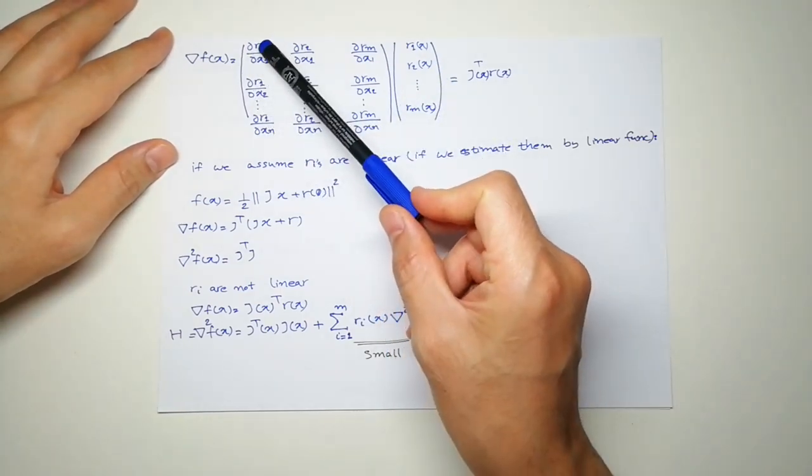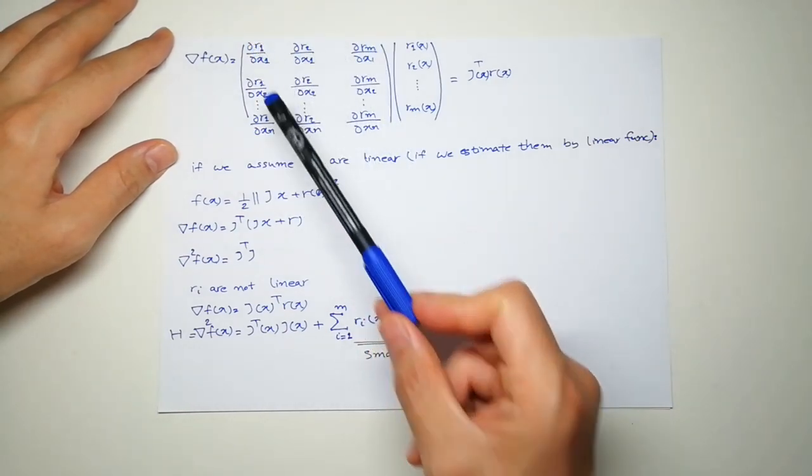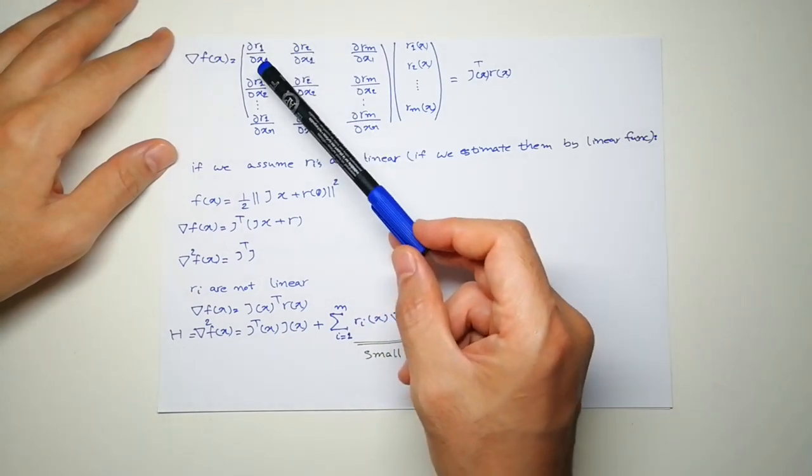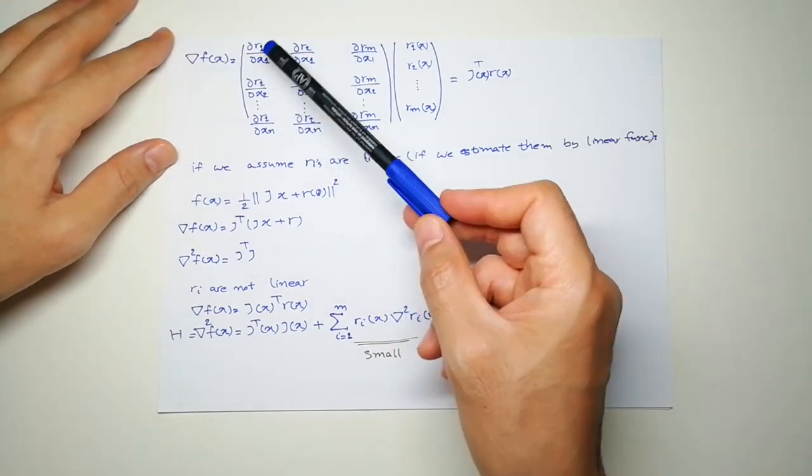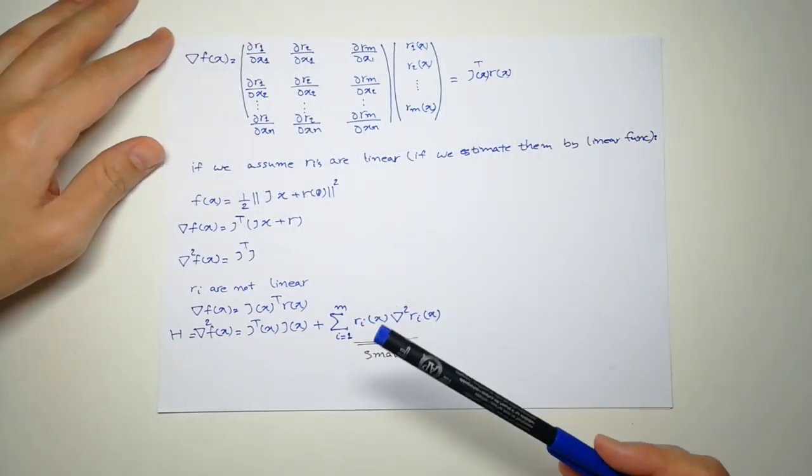And if you look at this, this is the transpose of the Jacobian, because the Jacobian, every row was the first output relative to all the parameters. Here it's a column, so it's exactly J transpose.